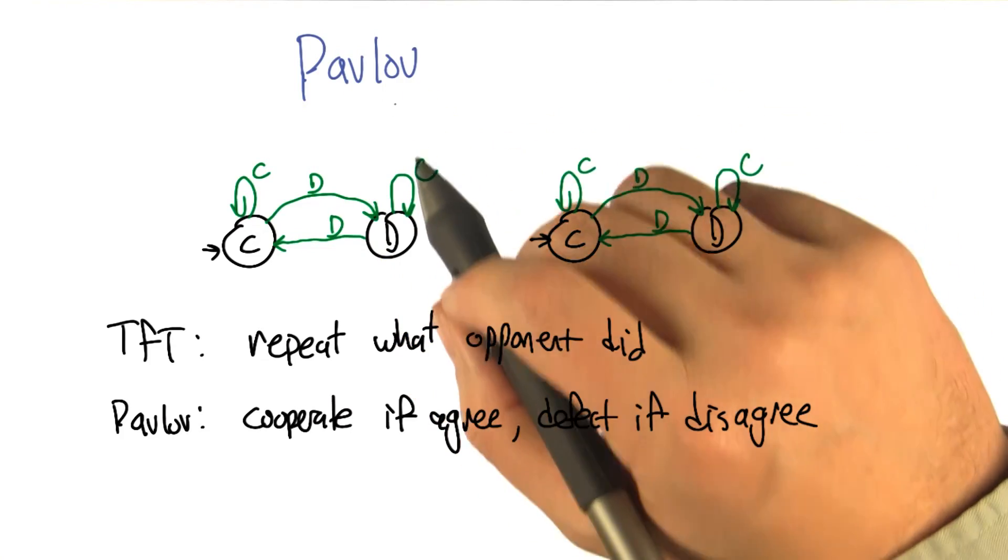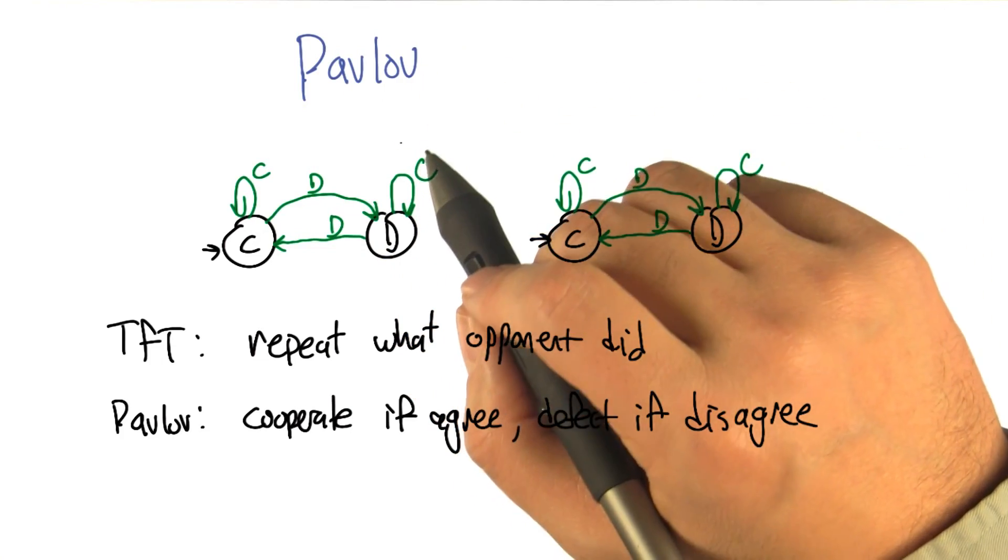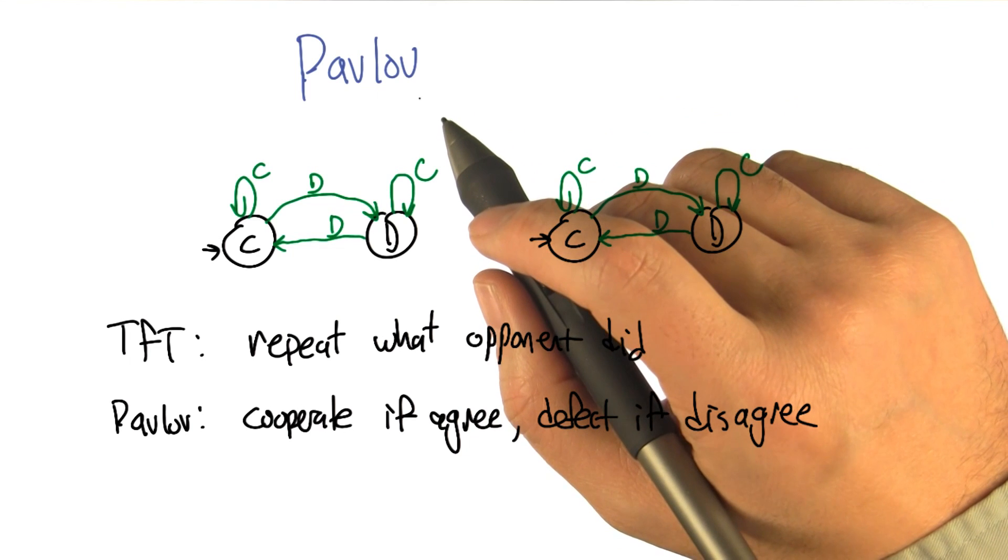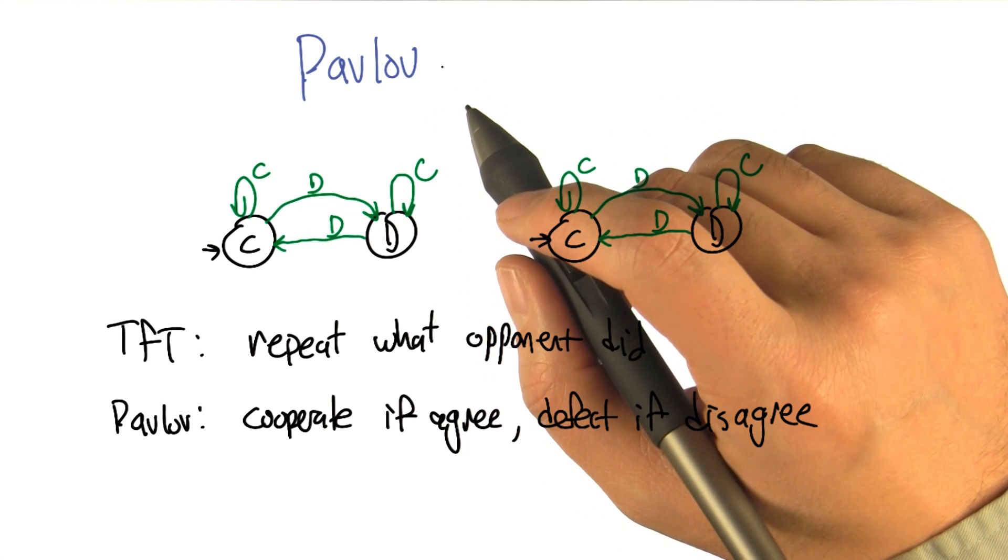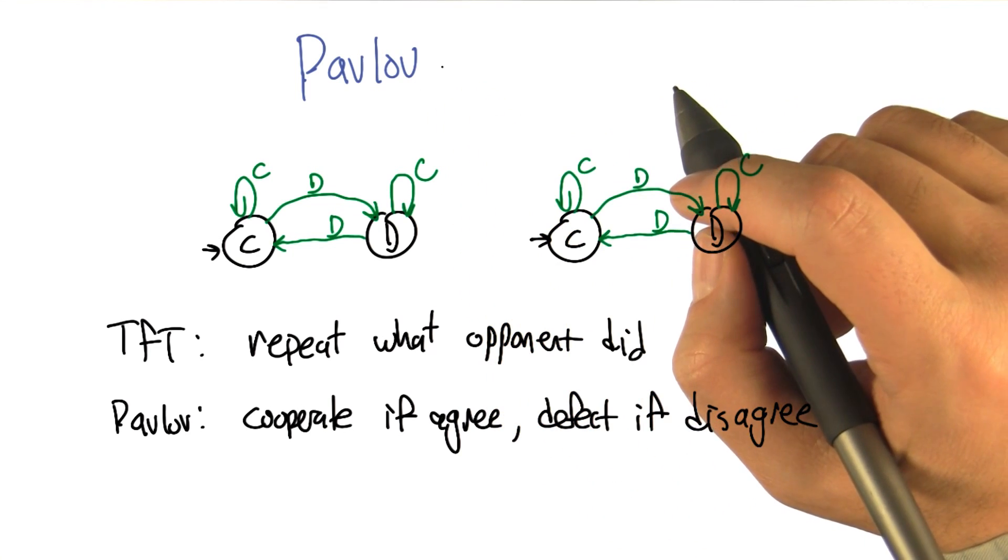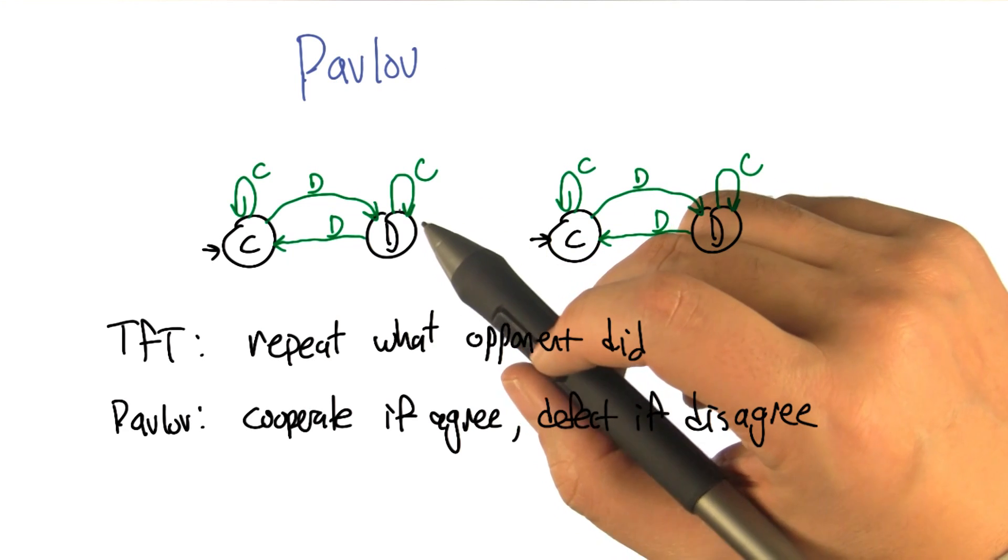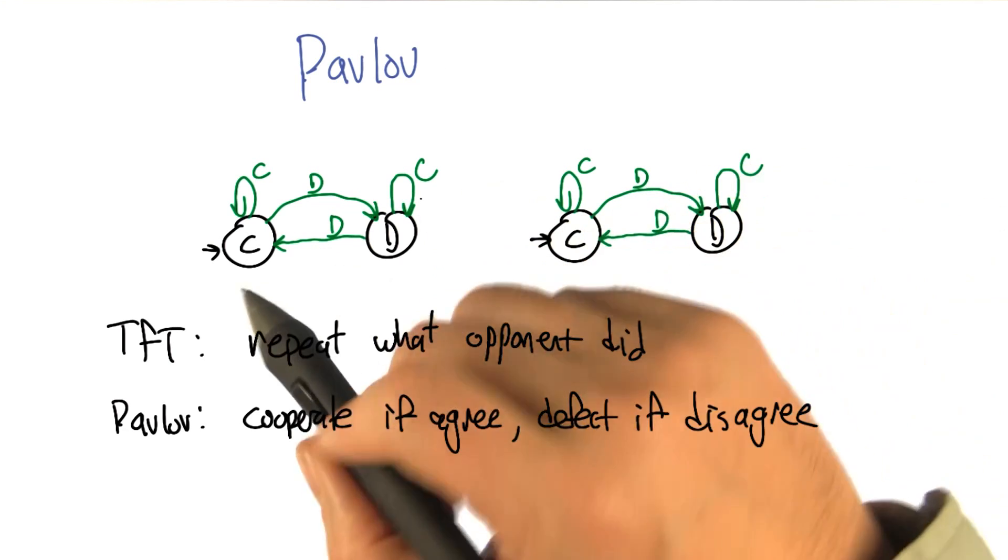So here's a machine sometimes referred to as Pavlov, named after the Russian psychologist who was studying gastric juices and then figured out how animals learn. I don't know why it's called that in this particular case, but here's what the machine looks like.